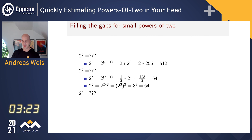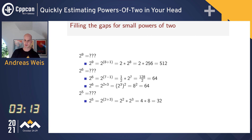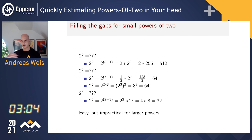One last example for good measure: 2^5. Five is two plus three, so it's 2^2 times 2^3, which is four times eight, which is 32. These kinds of mental tricks work pretty well for small powers and are quite easy to do, but it gets harder and harder for larger powers as our gaps of known powers get larger and larger.